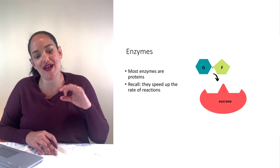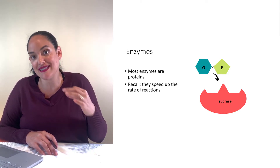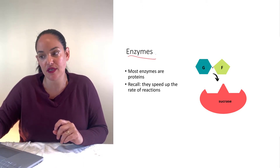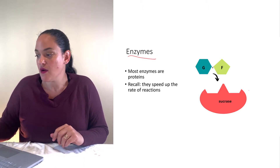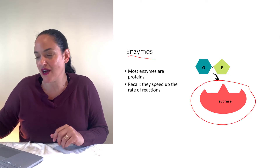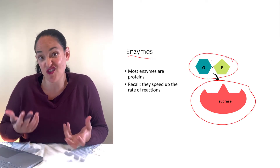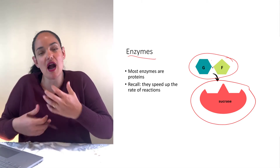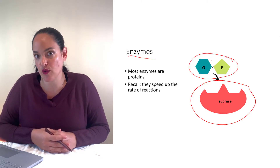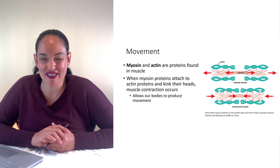Protein is also really important for accelerating the rate of chemical reactions, because enzymes are typically protein. We learned about enzymes in chapter 3 — enzymes provide a location where molecules that need to react can dock, and then that chemical reaction can occur, speeding up the rate at which various chemical reactions take place.